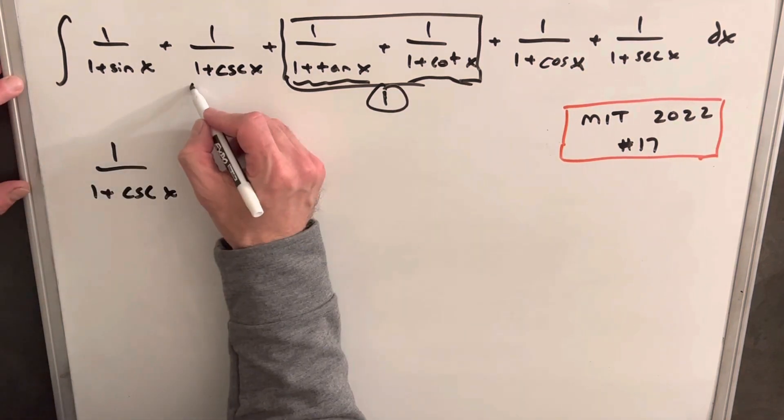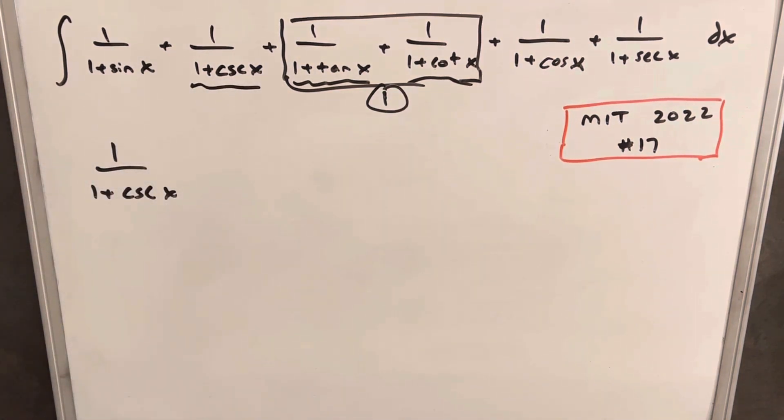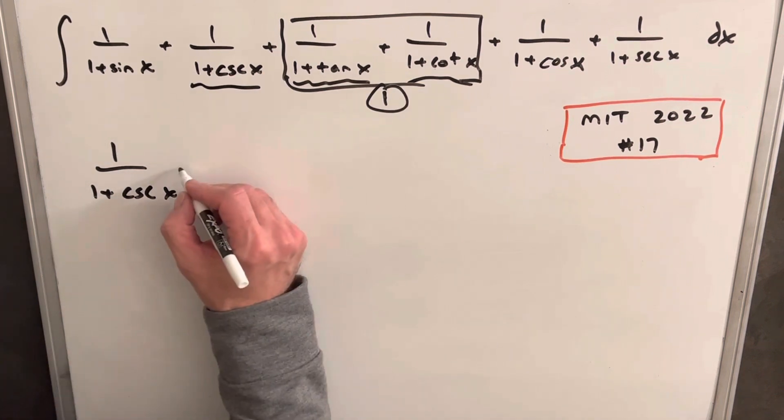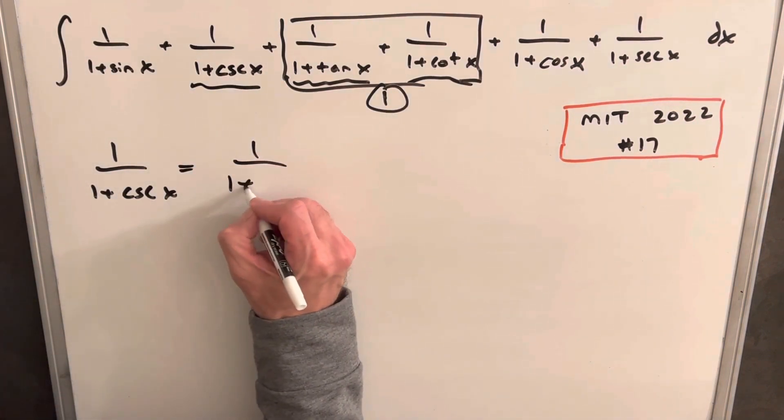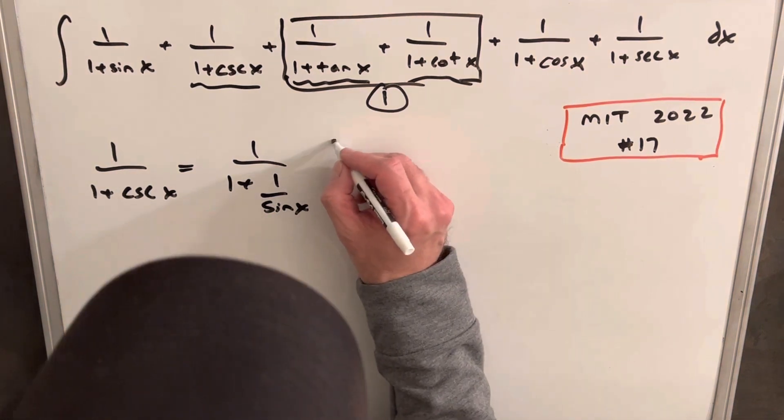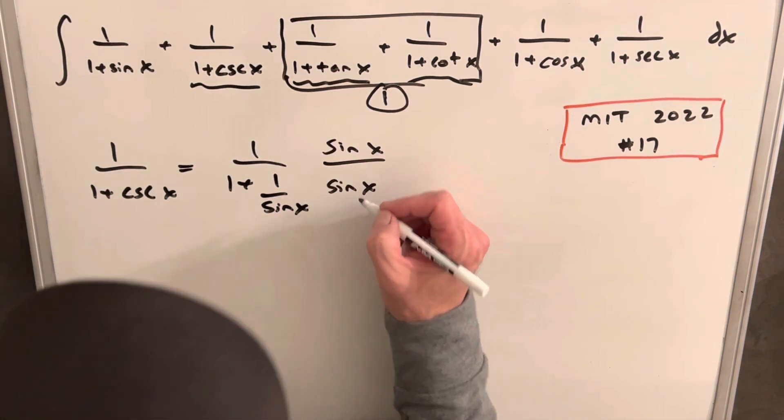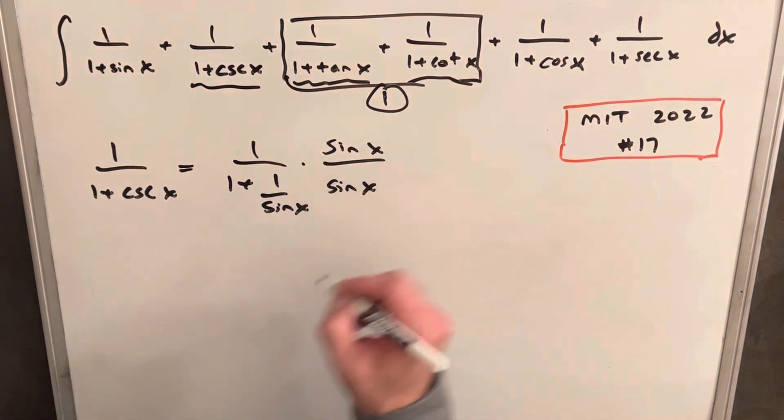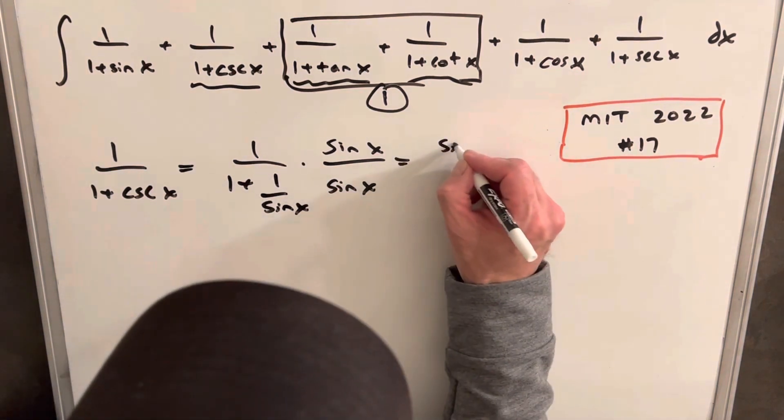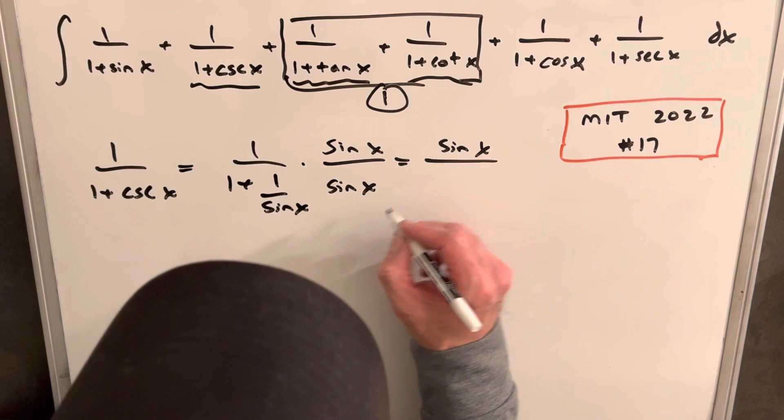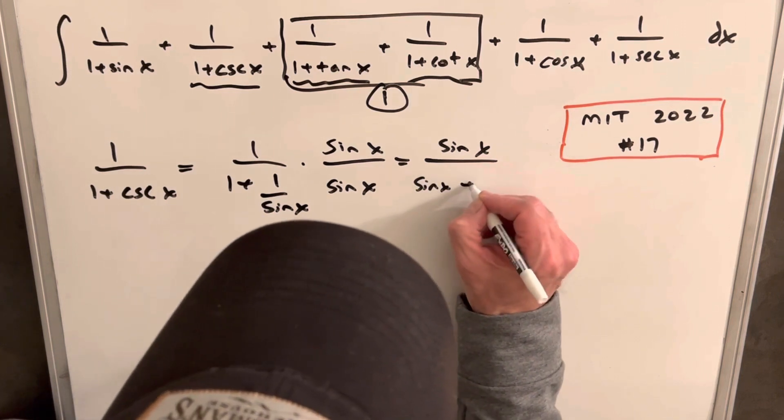Next I want to do something similar with our 1 over 1 plus cosecant x. But then I can just multiply this by sine x over sine x, which is just multiplying by 1. And then we're going to get sine x over sine x plus 1.